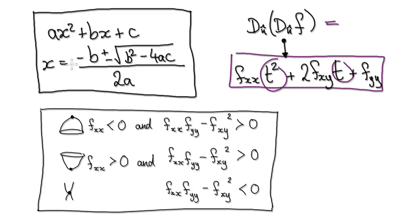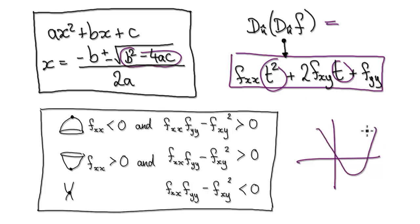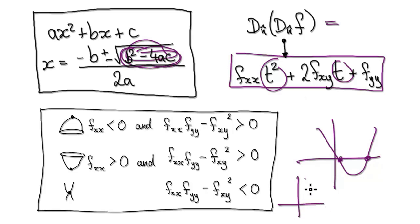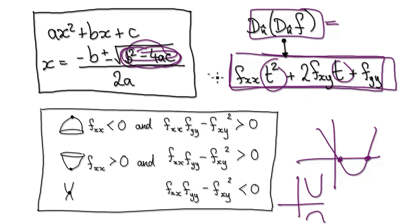So the directional derivative of a directional derivative equals this quadratic expression. Remember from high school: if the discriminant (B² − 4AC) is positive, you get two solutions; if it's negative, you get no real solutions. This thing here depends on these terms. So if this quadratic has two solutions, it means the concavity is sometimes positive and sometimes negative.